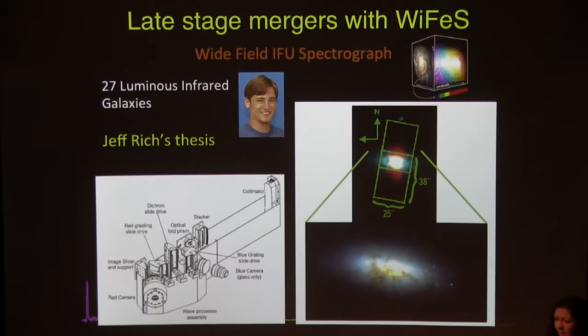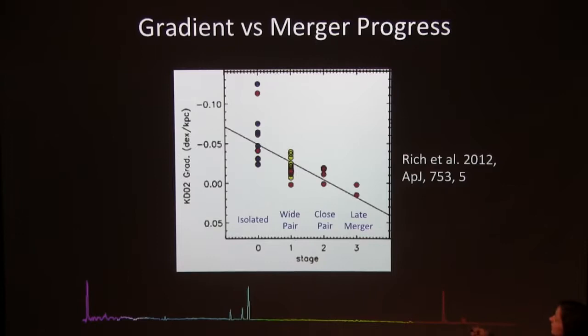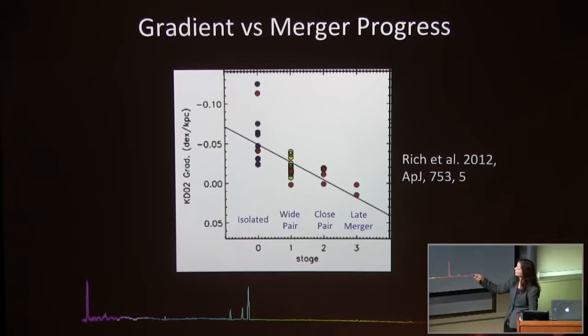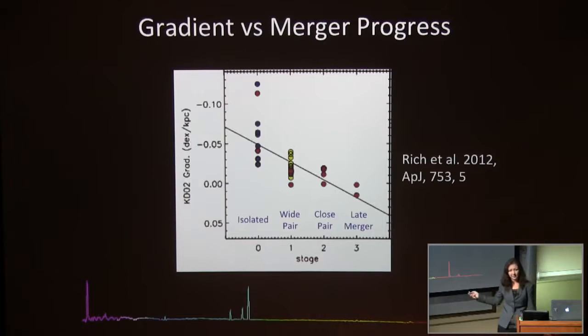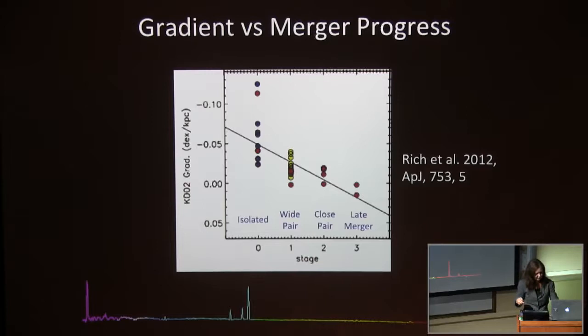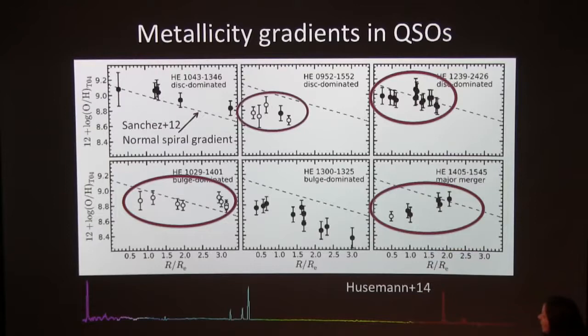For late-stage mergers we needed integral field spectroscopy — this was part of Geoff Rich's PhD thesis. He observed 40 luminous infrared galaxies with our ANU 2.3-meter wide spectrograph and plotted the gradient versus merger stage. Isolated galaxies have a range of steep gradients. Wide pairs have flatter gradients; close pairs, even flatter; late mergers are consistent with zero gradient. This shows that mergers drive pristine gas into galaxies and flatten the gradients, so we can use gradients to trace mergers. If a galaxy has a flat gradient, chances are it's had some dynamical disturbance with gas flows.